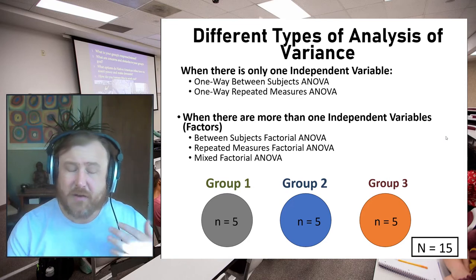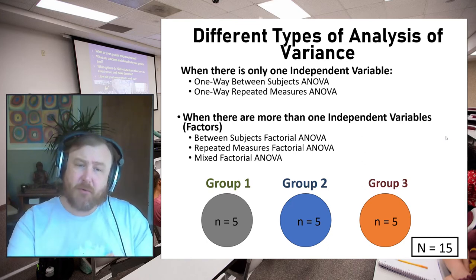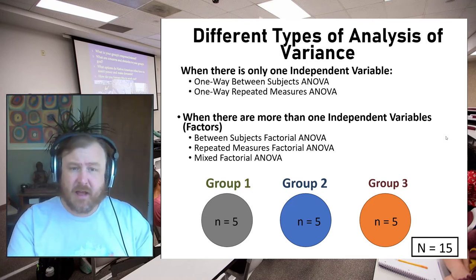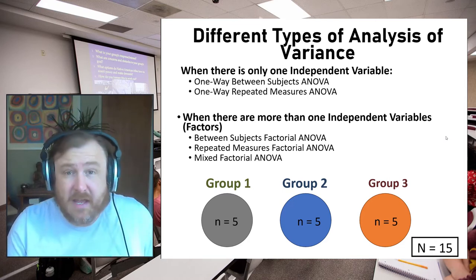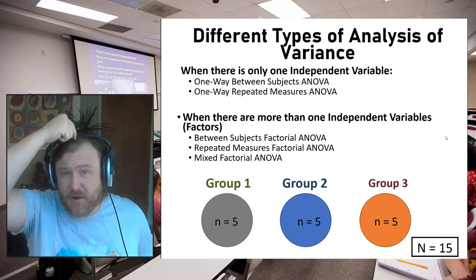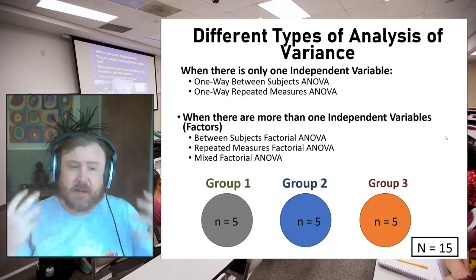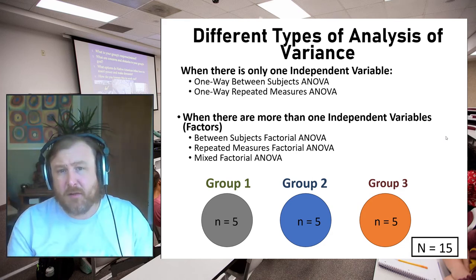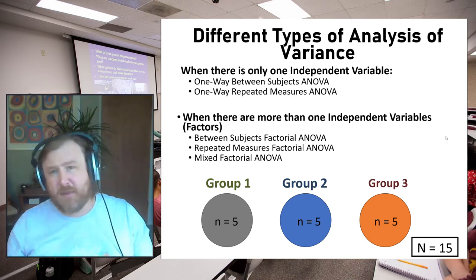We could also have two repeated-measures variables, where we're measuring people on multiple variables over time — for example, pre-post measurements, or in an EEG study, measuring two different electrodes within the same person. That would be a repeated-measures factorial ANOVA. A mixed factorial ANOVA is whenever you have some combination of between-subjects and repeated-measures independent variables.